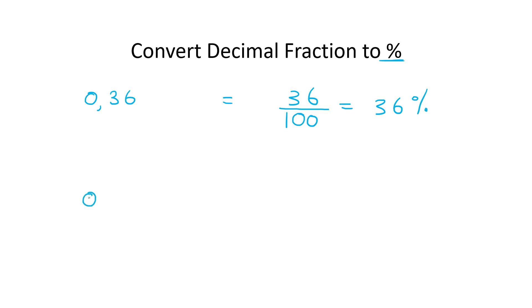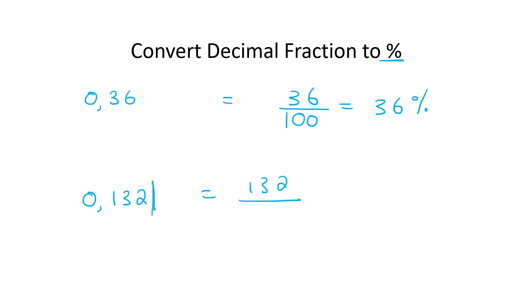If I give you something like 0.132, then I want you to take the number that you can see, which is 132, and put it over. Now start at the back — how many decimal places? One, two, three. So put three zeros and then a one, giving 132 over 1000.